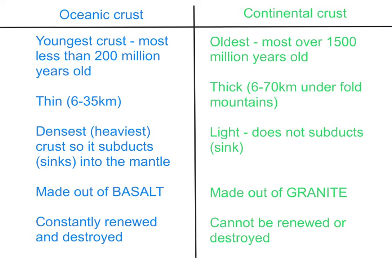The third characteristic by which they differ refers to density. Oceanic crust is the densest crust, meaning it is heavier, so it subducts into the mantle. Continental crust is made up of oxygen and silica — lighter minerals — so it does not subduct.